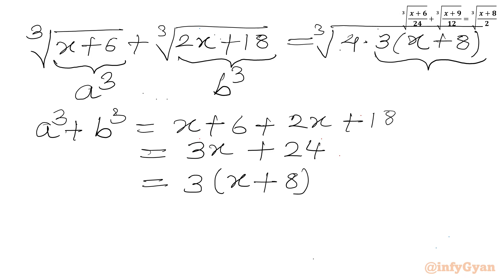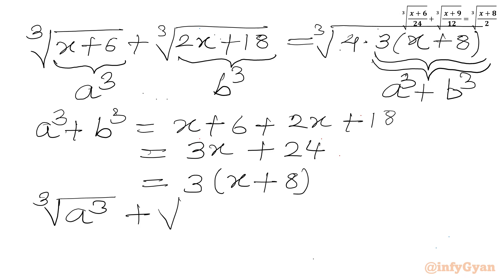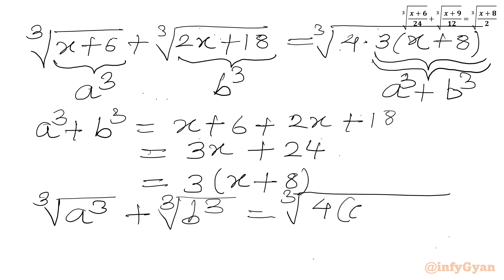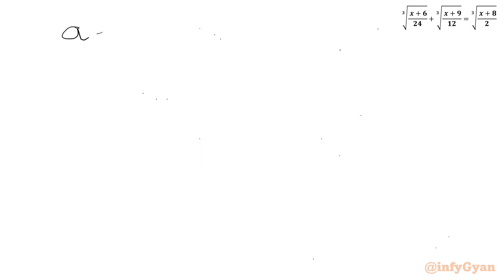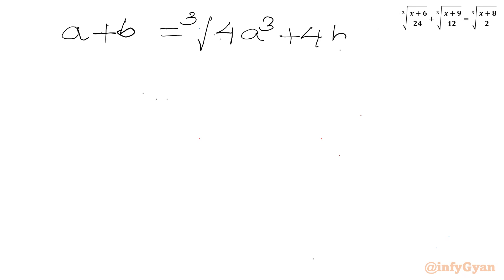So the bottom part is a cube plus b cube, which equals 3(x+8). Our equation will become cube root of a cube plus cube root of b cube equal to cube root of 4 times (a cube plus b cube). Let me write the equation here: A plus B equal to cube root of 4A³ plus 4B³.